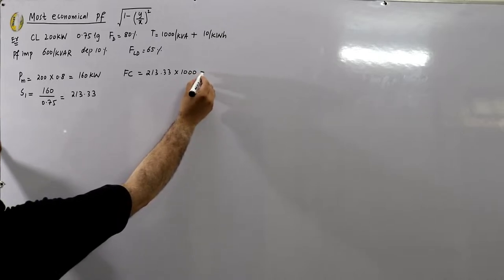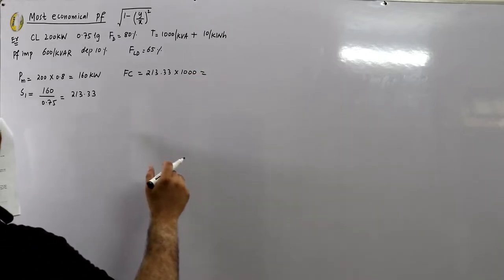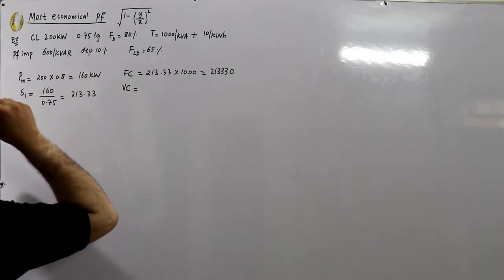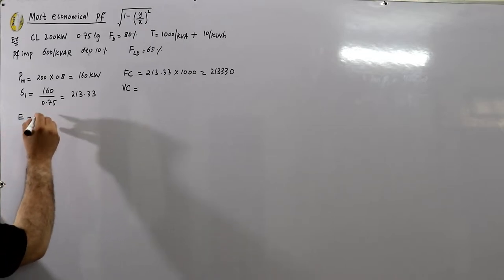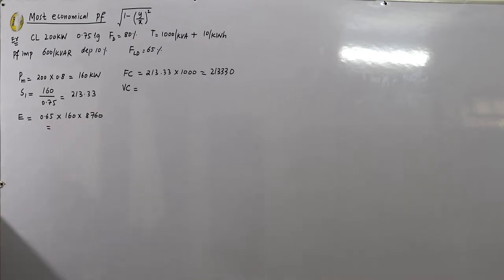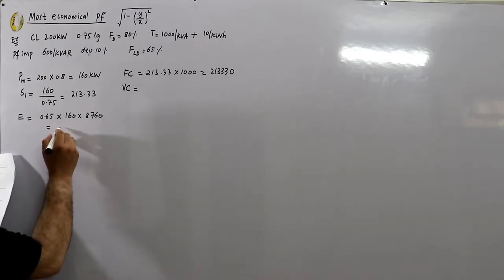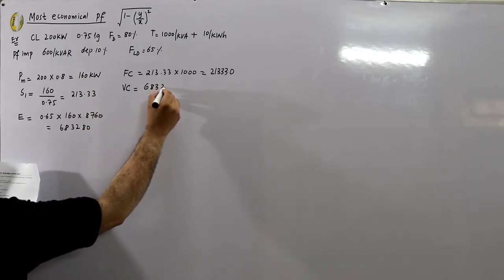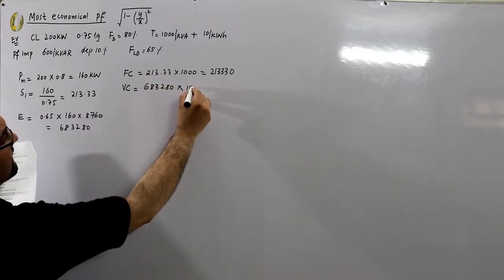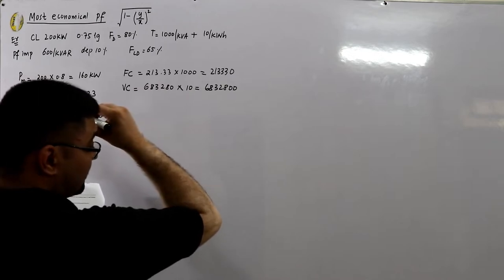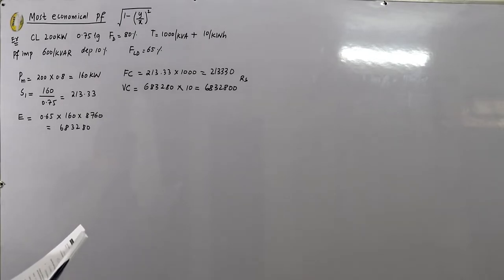The fixed cost is 213.33 multiplied by 1,000, giving 213,330 rupees. The variable cost is based on energy units. Energy units = load factor × maximum demand in kilowatts × time (8,760 hours annually), which comes out to 683,280 kWh. Multiplying by rupees 10 gives 6,832,800 rupees.